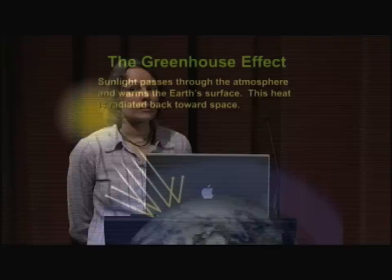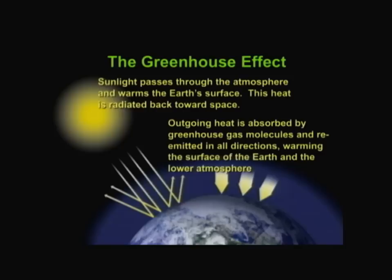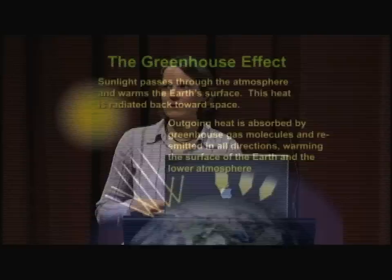The greenhouse effect is very important. Sunlight passes through the atmosphere from the sun to the earth, hits the earth's surface, and warms it — that's why it's warmer during the day than at night. That heat is then radiated back out towards space. But as it passes through the atmosphere, it gets caught by greenhouse gas molecules, including water vapor, carbon dioxide, methane, and a few others. Those molecules trap that heat — they get excited and shake, then re-emit that heat energy in all directions: some goes back out to space, some warms the atmosphere, and some goes back towards the earth's surface and warms the earth.